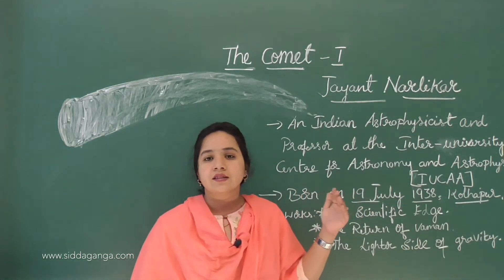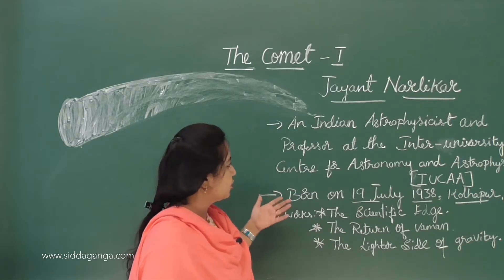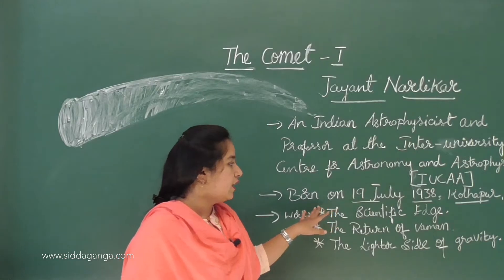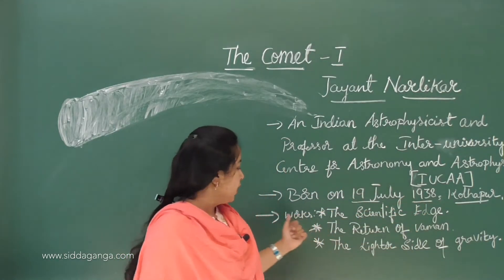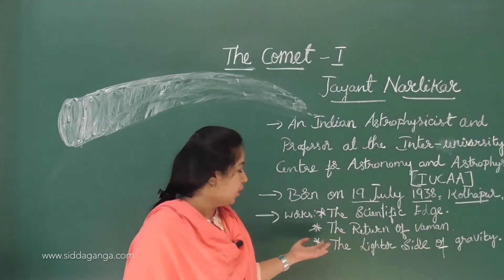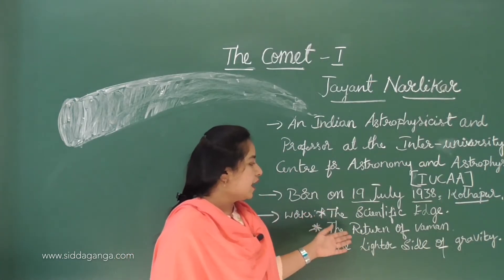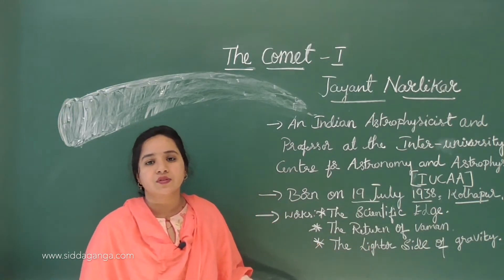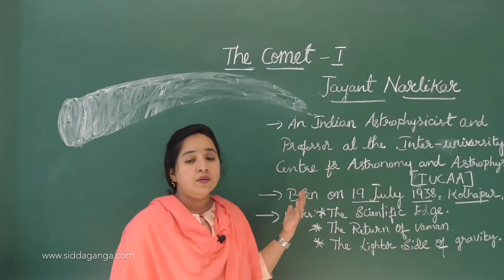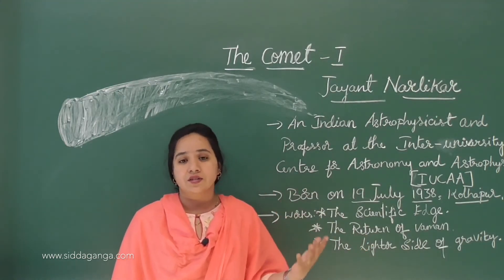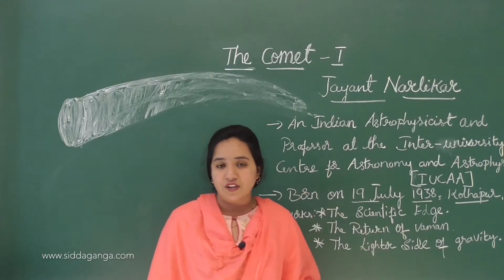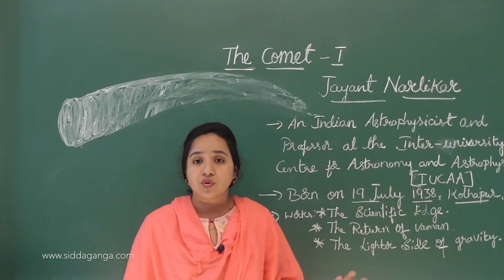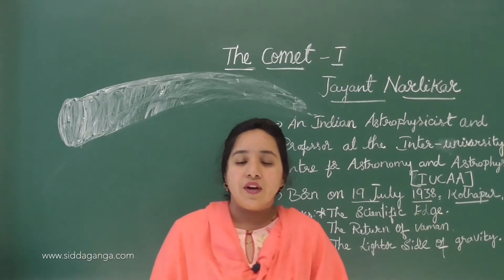He was working in this institute. He was born on 19th July 1938 in Kolhapur. Some of his notable works are 'The Scientific Edge,' 'The Return of Vaman,' and 'The Lighter Side of Gravity' — books written based on physics and his research in astronomy and astrophysics.